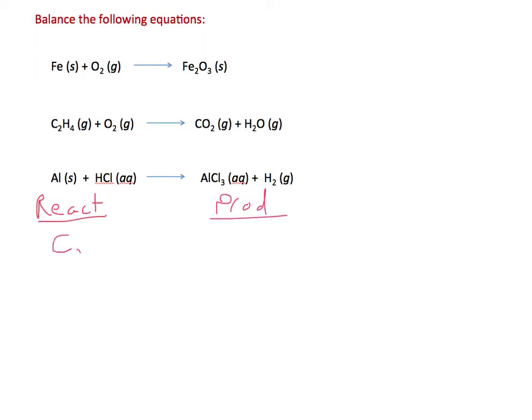Our reactants, we have C2, we have H4, and we have an O2. On the product side, we have a carbon, we have H2, and then we have both an O2 and a free oxygen. And so both of those are just coming from the CO2 and the H2O.